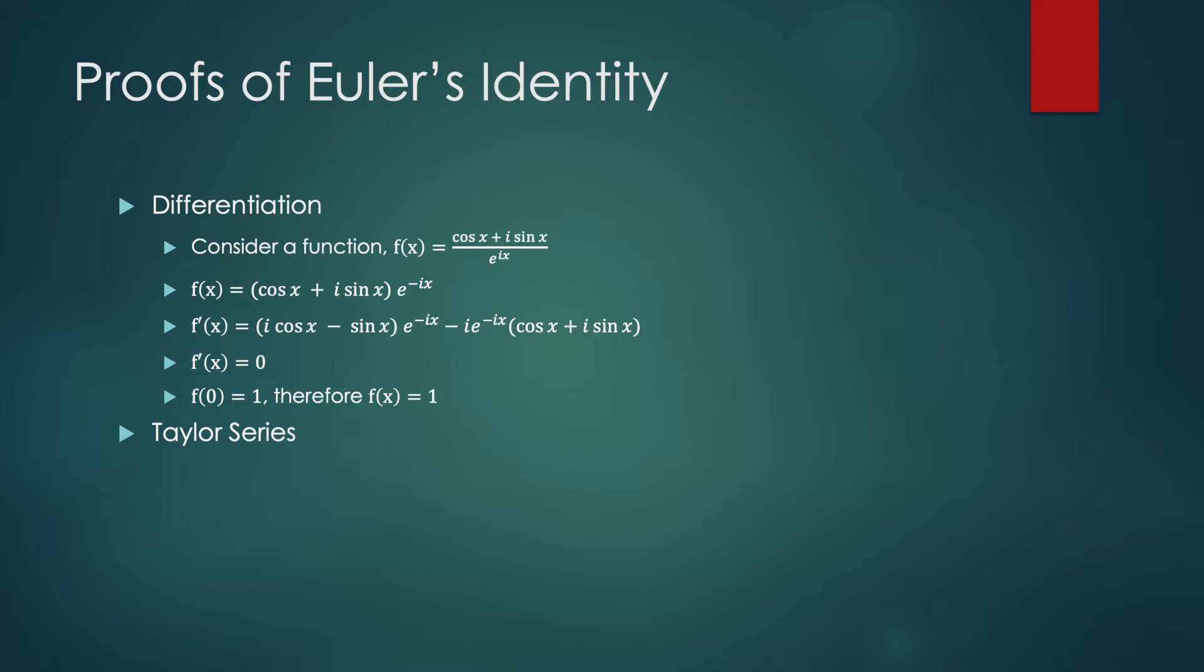So the Taylor series of e to the IX is 1 plus IX plus IX squared over 2 factorial plus IX cubed over 3 factorial, and this pattern continues forever.